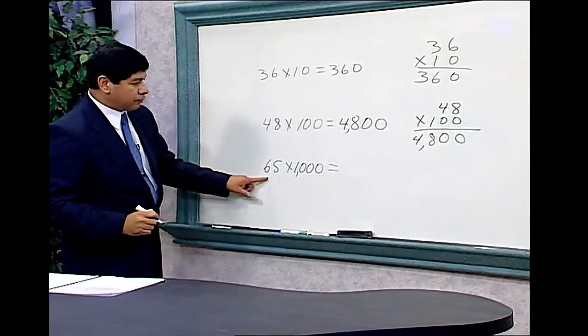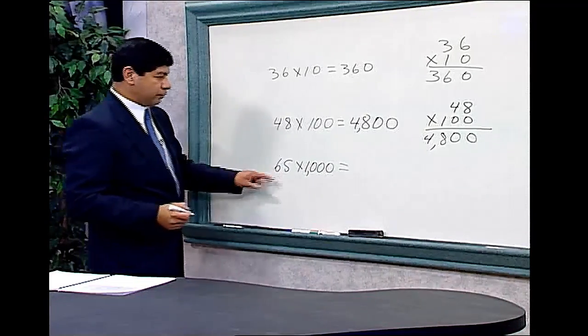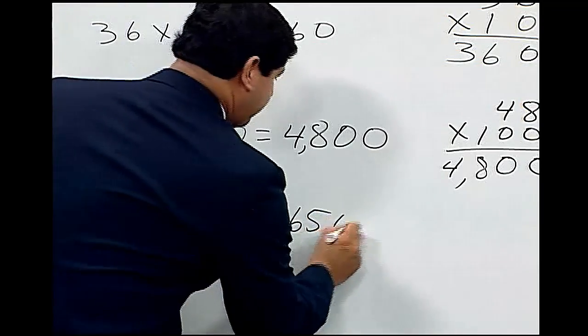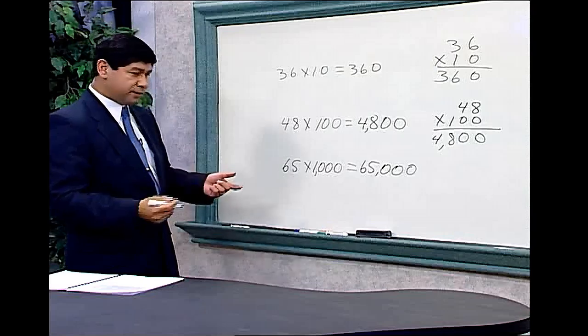And to multiply a number by 1,000, again, we just add three 0s to the right of the number. So we have 65 and our three 0s, which makes this 65,000 very easy to do.